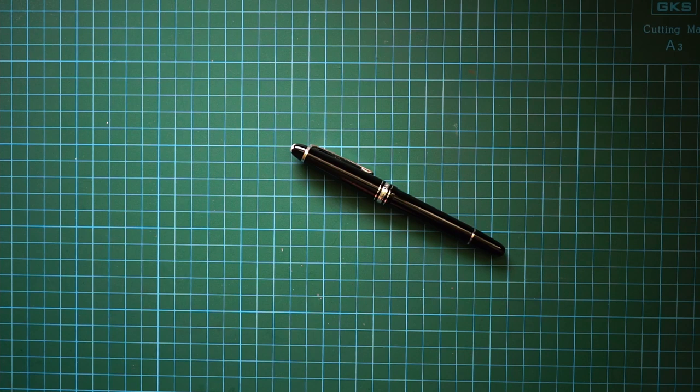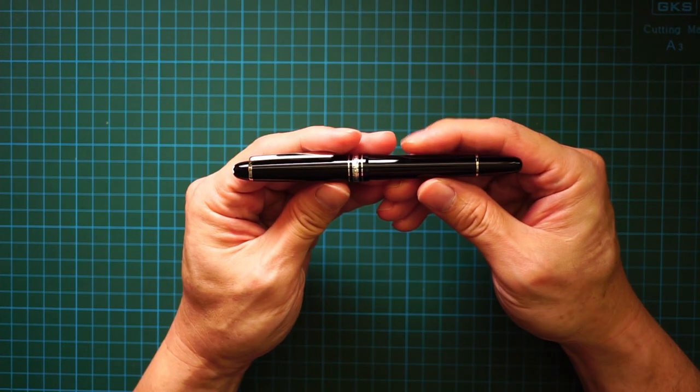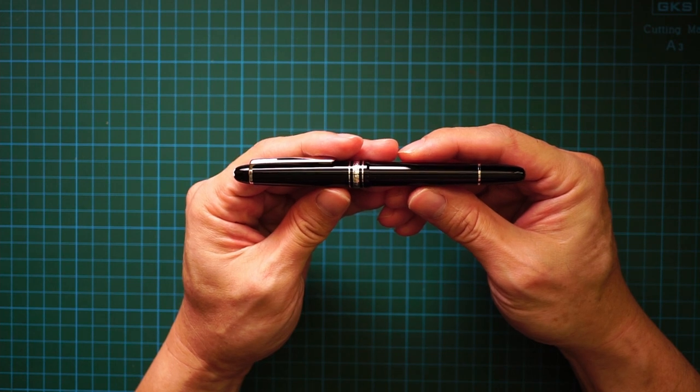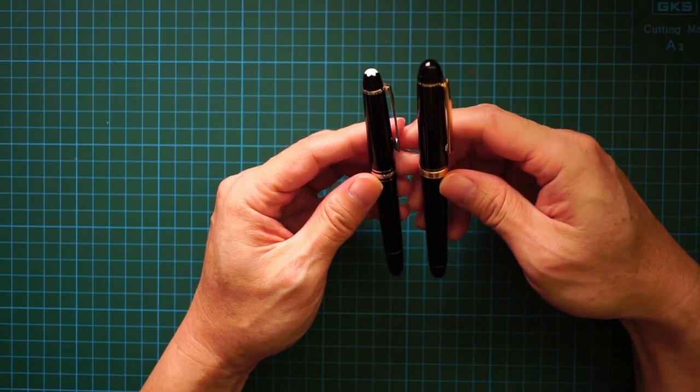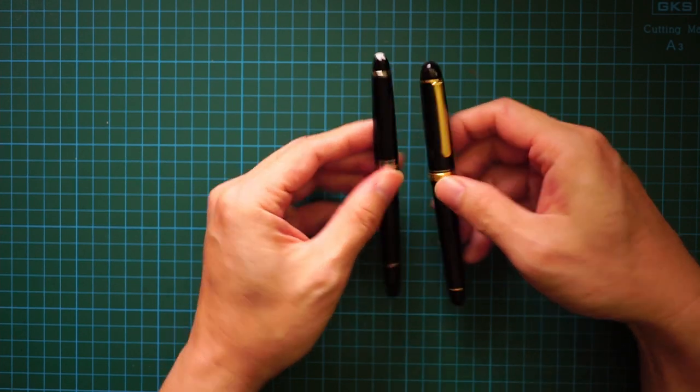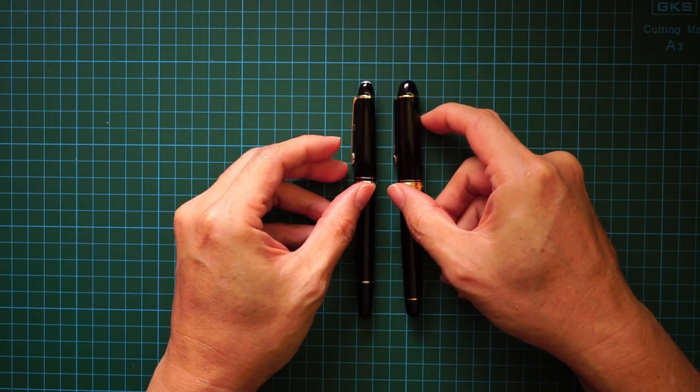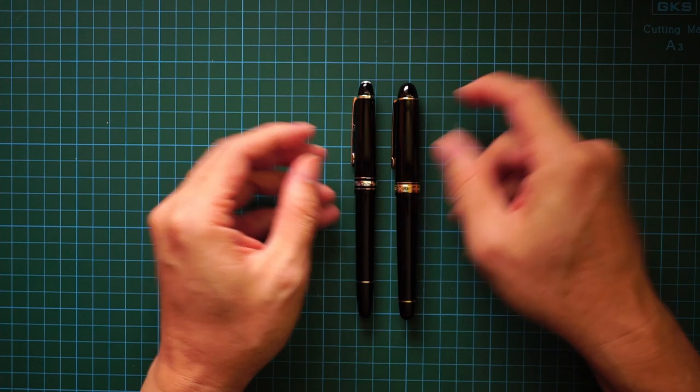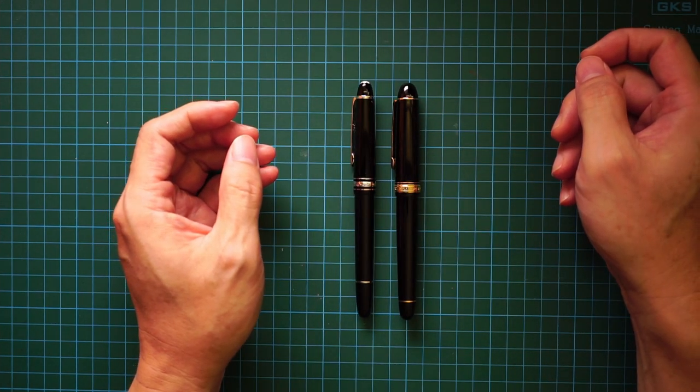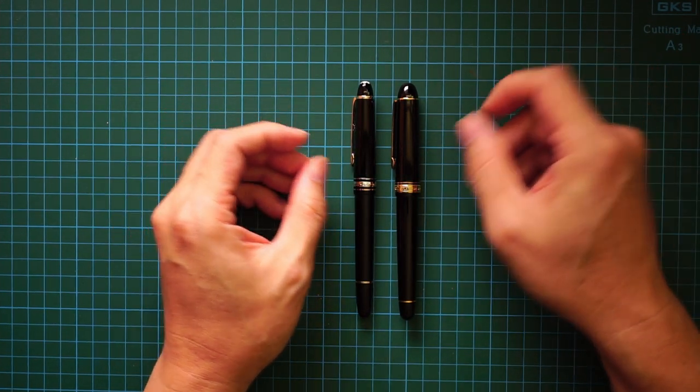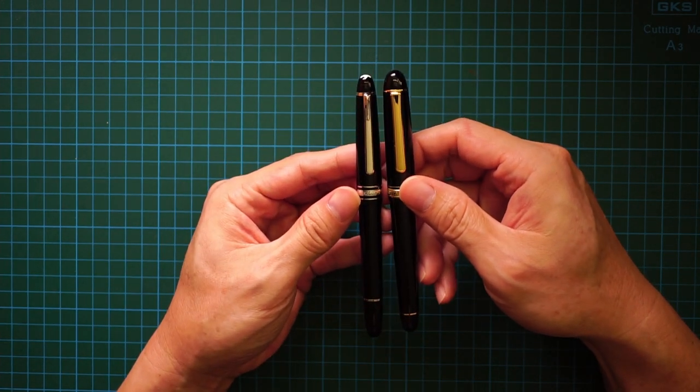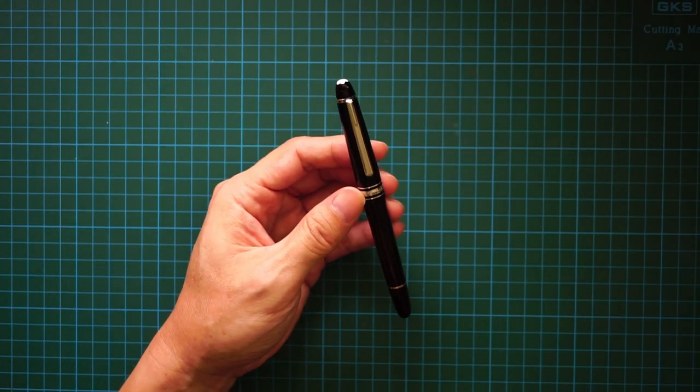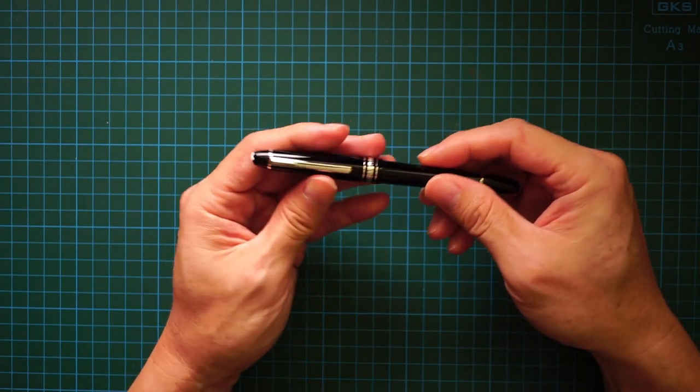So let's take a quick look at this pen. It's definitely a diminutive size for a pen. Bringing in my 3776, it's just scarcely longer than the 3776, and the 3776 is definitely girthier. So it's a very slim pen, it's a very elegant pen.